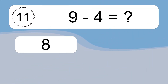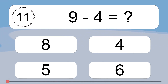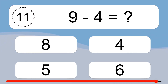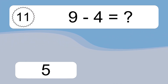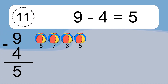9 minus 4 equals what? 9 minus 4 equals 5. Let's count it: 8, 7, 6, 5.